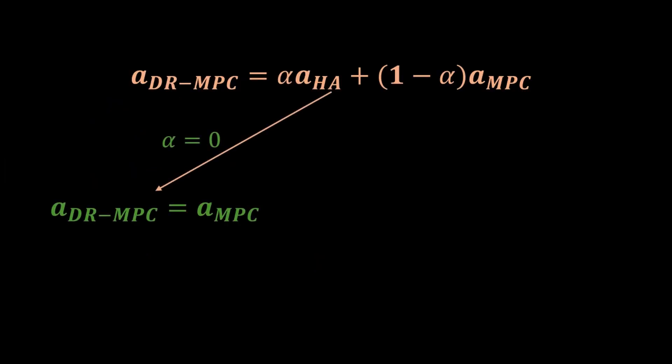When alpha is zero, the action is purely MPC. When alpha is one, it fully prioritizes human avoidance.